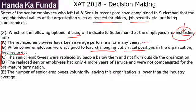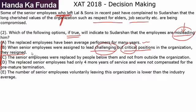Option B: When senior employees were assigned to lead challenging but critical positions, they resigned. This is very valid information — it gives insight as to why these people left the organization. Note that they were not fired; they left. This explains the logic behind why they left: they did not like the challenging positions, were comfortable in their cozy jobs, and are now complaining. Option B is a very good option.